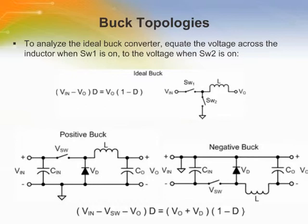The negative buck is a mirror image of the positive buck. Note that the diode points in the direction of positive current flow at the output. For a practical buck converter, the loss elements must be accounted for.